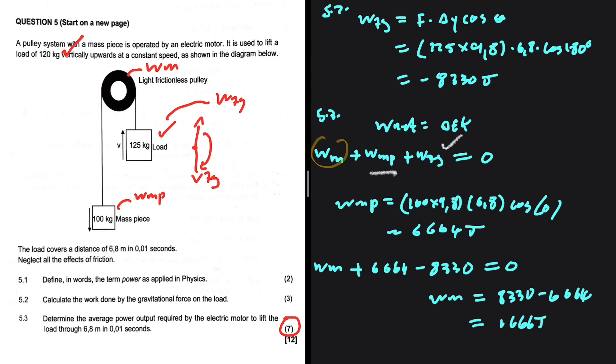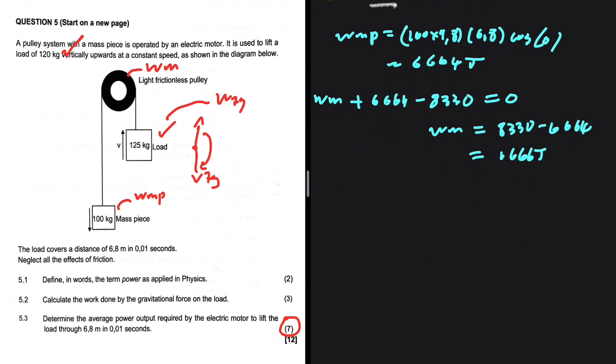This is the work done by the motor, but we're looking for the power. The power is the rate at which work is done. So we're just going to have 1666 divided by the time, 0.01.